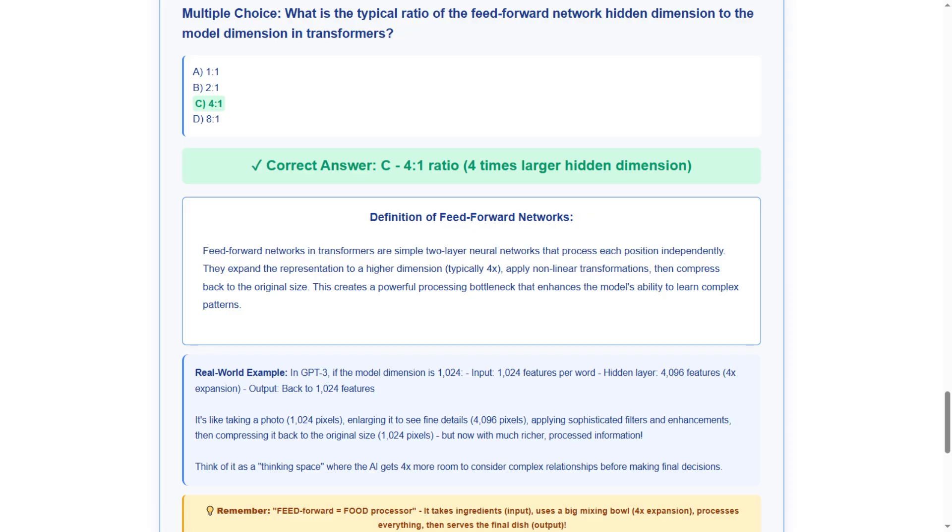The correct answer is C, 4 to 1 ratio, meaning 4 times larger hidden dimension. We chose this because transformers consistently use this 4x expansion pattern to create sufficient processing space for complex pattern recognition while maintaining computational efficiency.